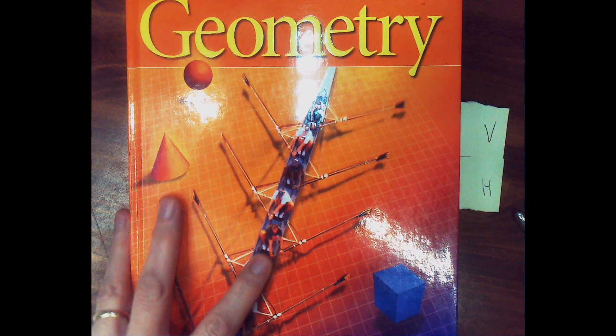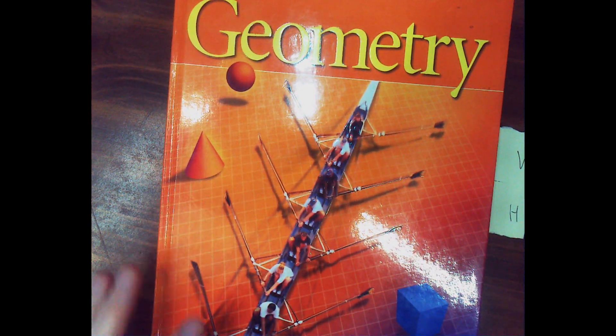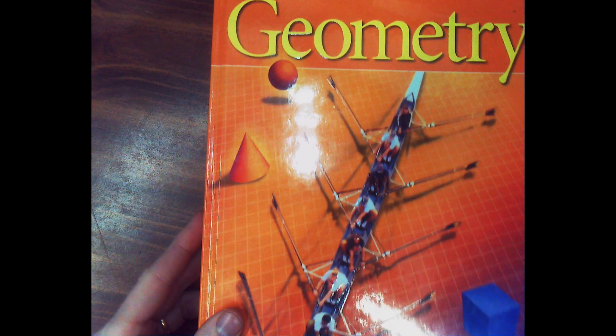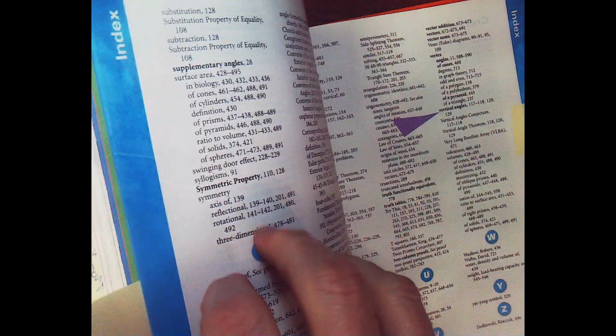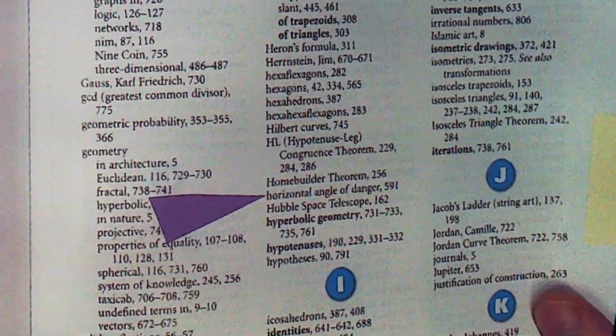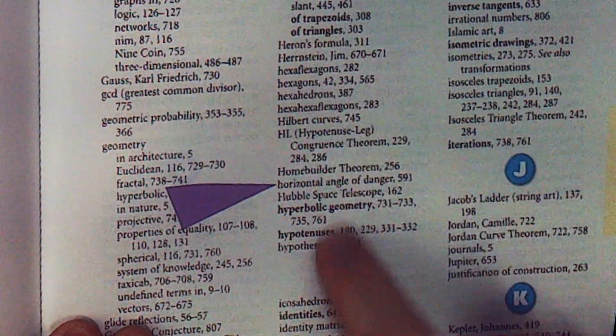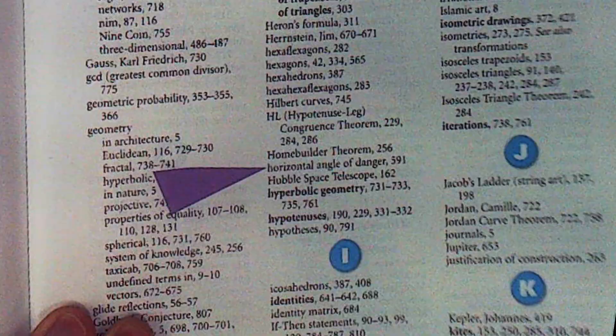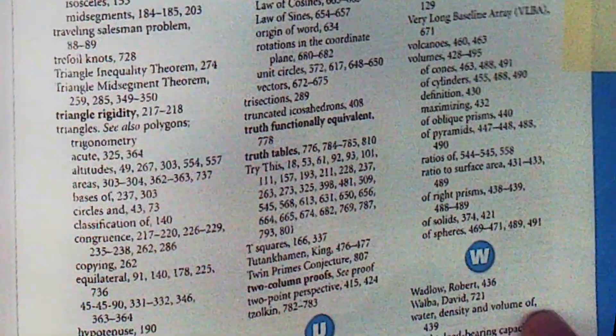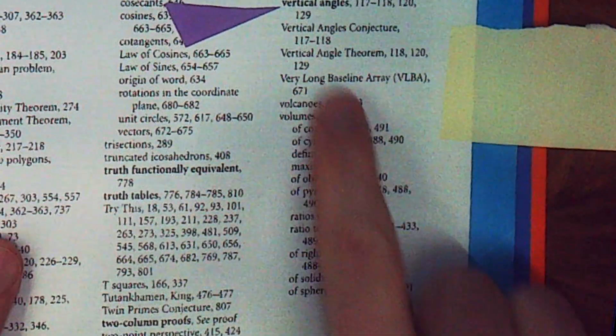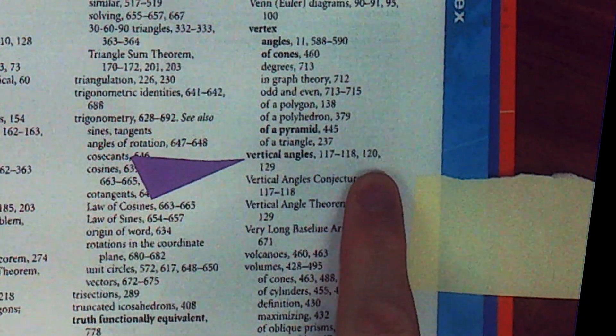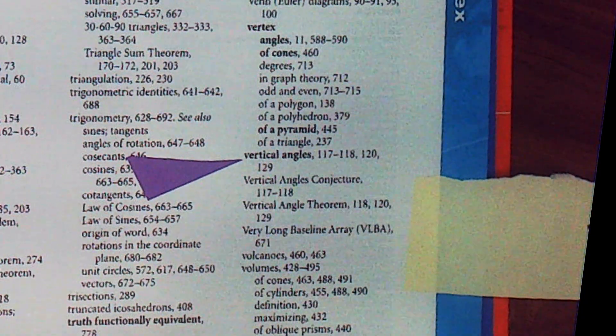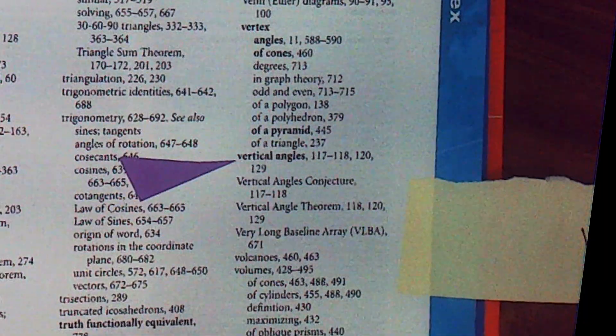But let's start with a geometry textbook. And I'm just basically going to look into the index. So let's look up in the H. And we see there is no definition of horizontal. We see horizontal angle of danger. I'll cover that when I do the sextant. Let's take a look at V. We see vertical angles, but we see no definition of vertical lines.